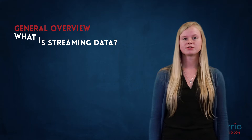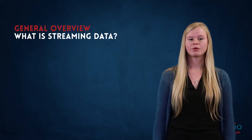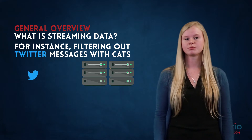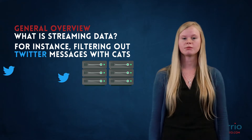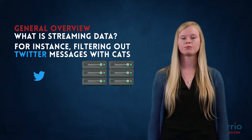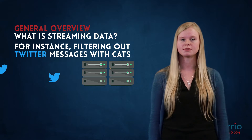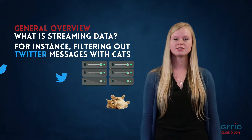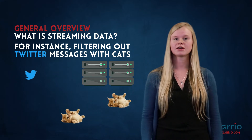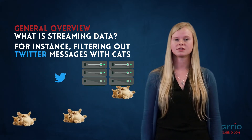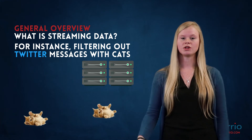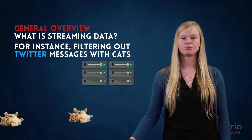First, a general overview of streaming frameworks. In this example you see that there is a raw data stream coming in — in this example, Twitter messages — flowing in real time into a distributed processing system. This processing system then transforms these messages and filters out all the CAT messages that the data contained. It will then output all those CATs, and that is what we call the processed data.